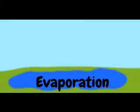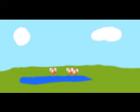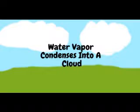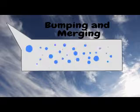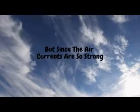The first part in what makes a cloud is evaporation. Puddles and lakes dry up and water vapor rises far up into the sky. Then the water vapor condenses into a cloud, where little water droplets are bumping into each other and merging.